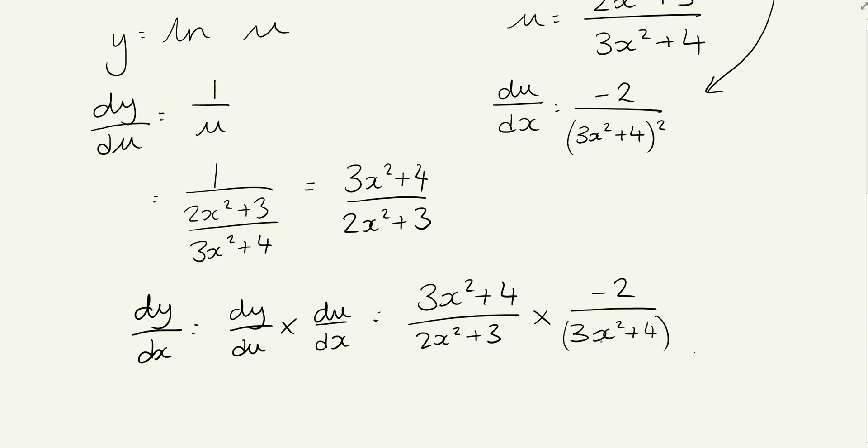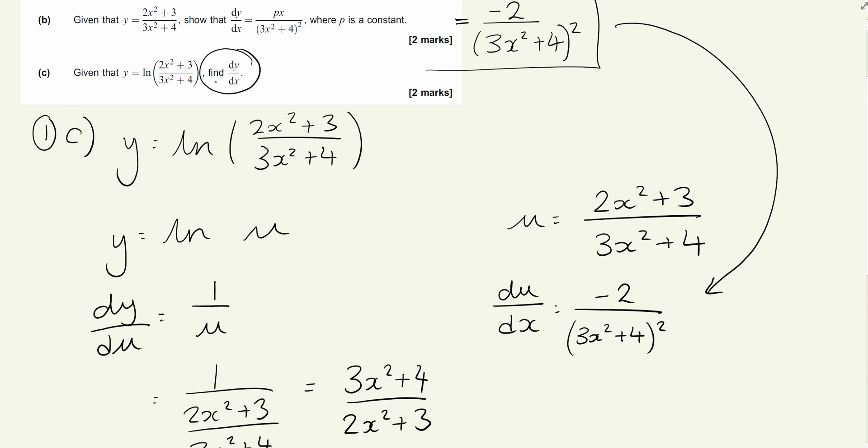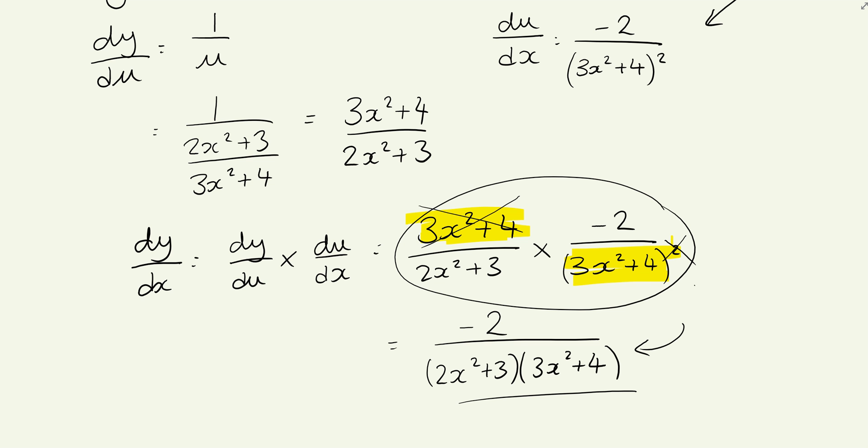There's no reason in this question to simplify this, but the best way to produce this solution would be to do some simplification. We've got a repeated 3x² + 4 and a (3x² + 4)². One of the squared will cancel with the top one, leaving us with -2/[(2x² + 3)(3x² + 4)]. There's no reason you can't leave it like that, because it doesn't ask for simplest form, but this is a much more neat mathematical solution to question 1 part c.